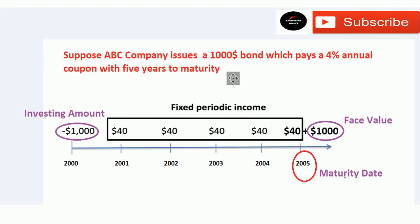For example, suppose ABC company issues a $1,000 bond which pays a 4% annual coupon with five years to maturity. Let's focus on this example. As you can see, there is a defined lifespan of the bond, which is five years.